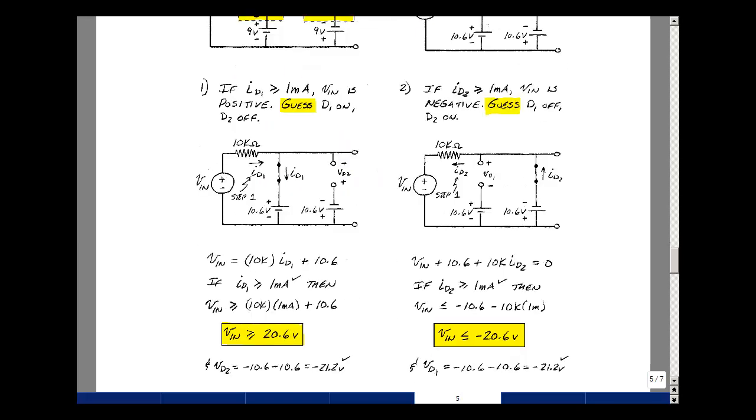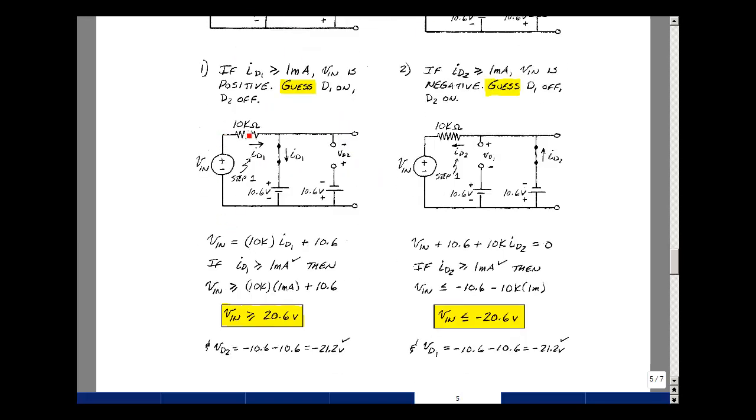Let's analyze the circuit. The rise in voltage is VN. The current in the 10k resistor now is ID1 because this is an open, and then plus the voltage 10.6. If ID1 is 1 milliamp, then this equation is 10k times 1 milliamp plus 10.6.